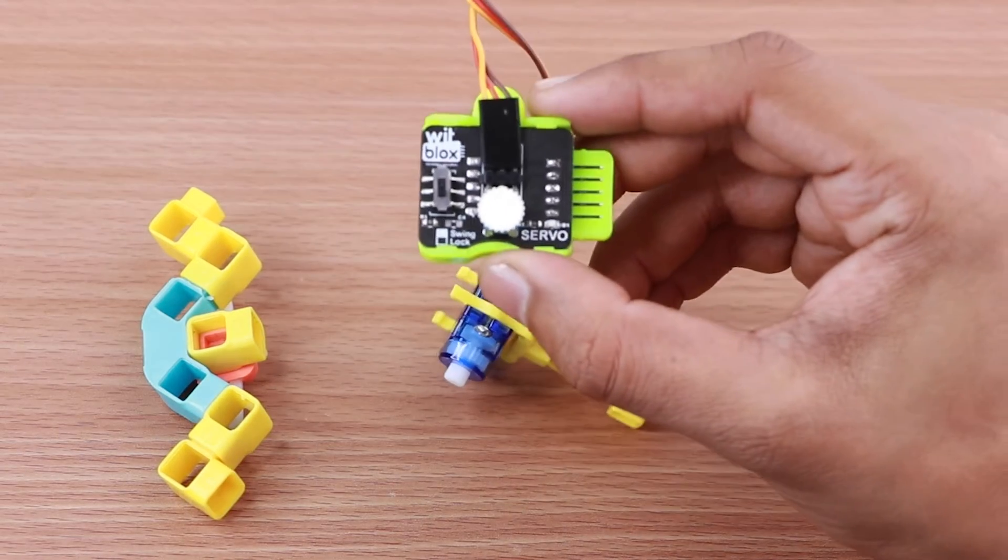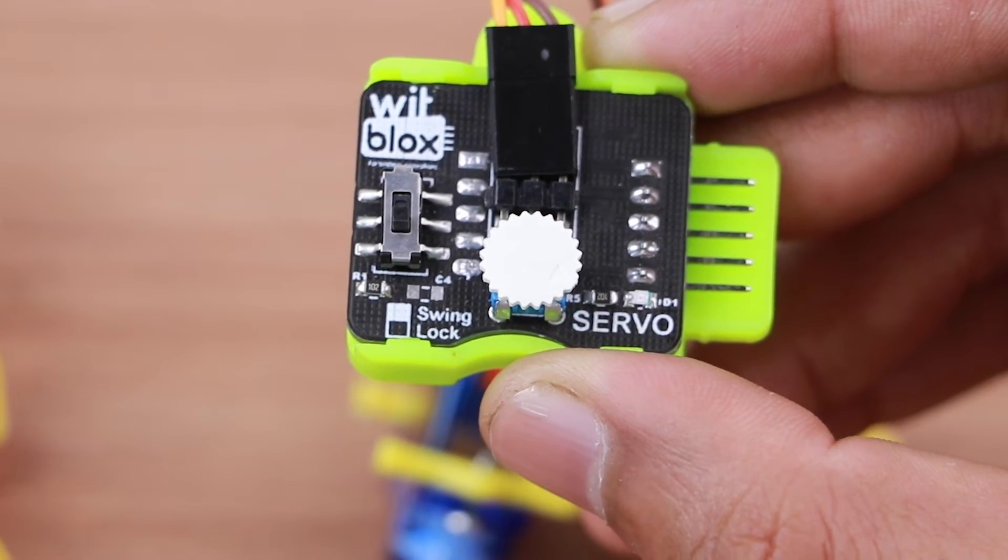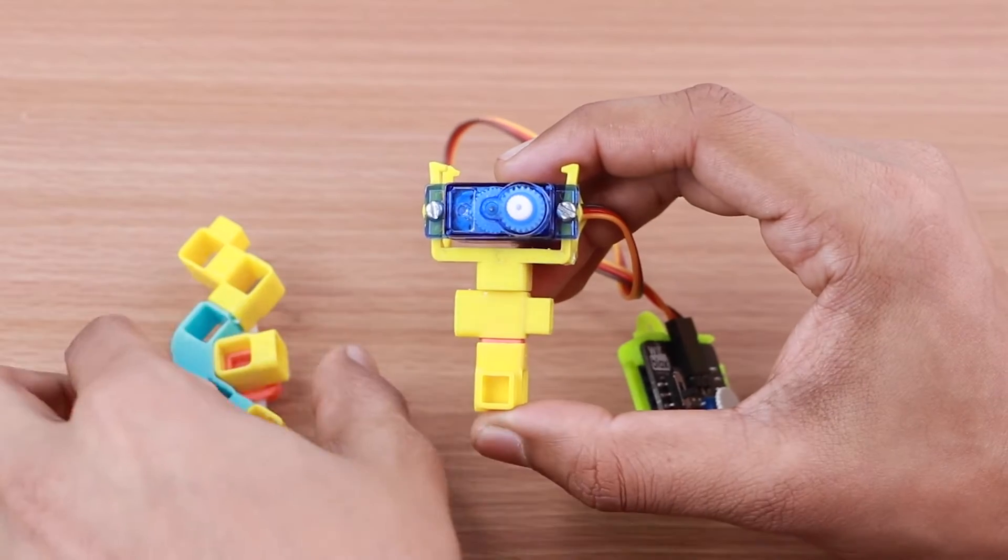Now set the servo blocks to a maximum that is 180 degrees. Join the servo shaft piece to the servo motor as shown.